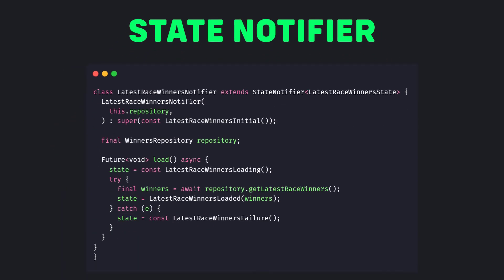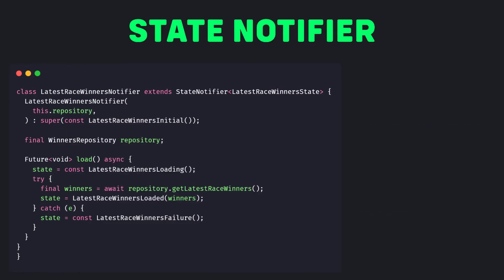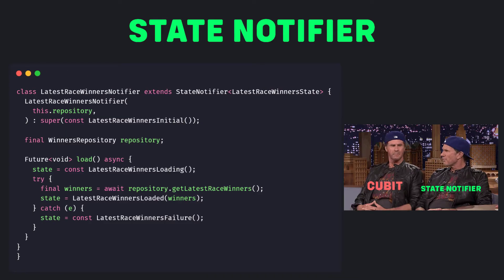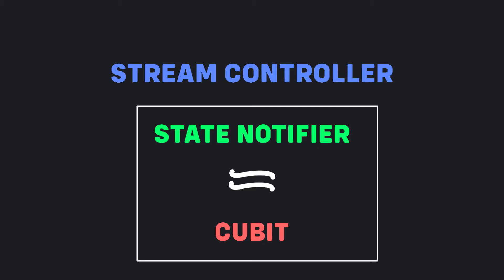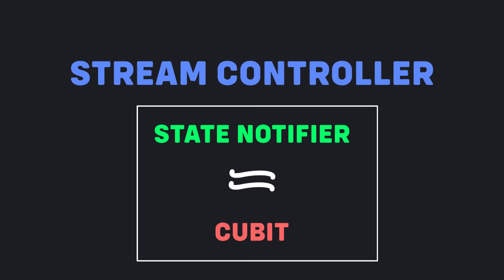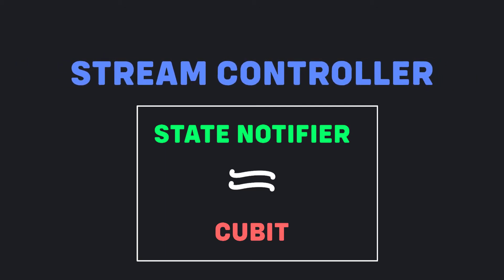RiverPod has something very similar to Cubit called StateNotifier. When we look at the code, we see that it is almost identical with Cubit. StateNotifier is just a Cubit — the implementation of both is very similar and both are based on StreamController, which is a concept already proven in real world applications.